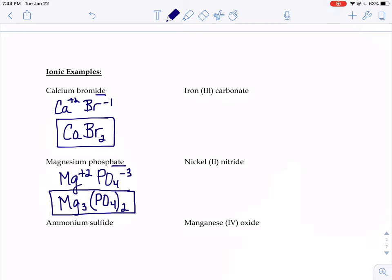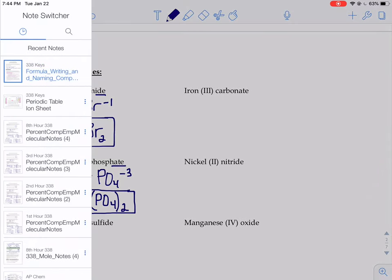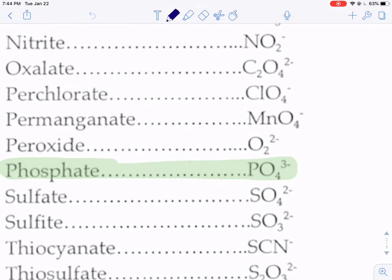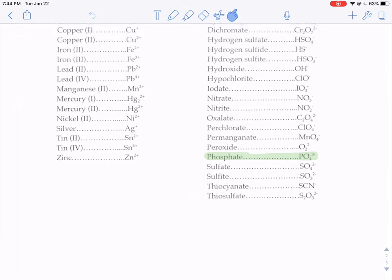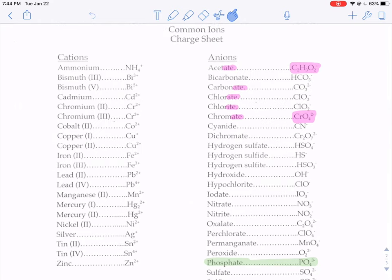Another example of that is the one right below it, ammonium sulfide. If you're thinking to yourself, I've never heard of the element ammonium before, you're right. You haven't. When you look at your charge sheet, ammonium is the only positive polyatomic ion that you're going to see in our class. So here's ammonium.